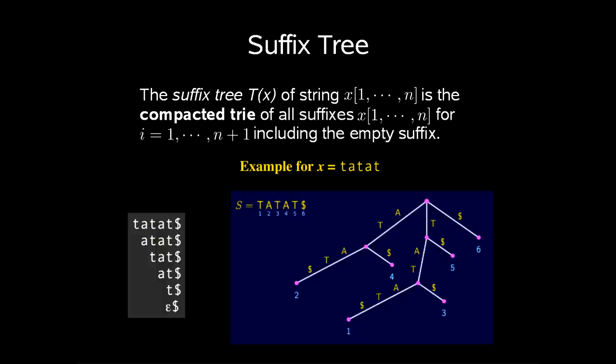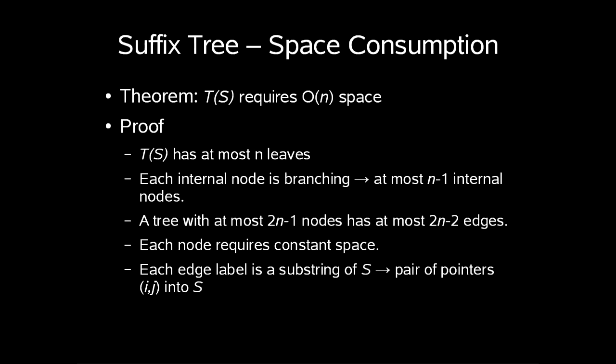A suffix tree named T of some string x from 1 to n is a compacted tree of all the suffixes of x of i to n for i equals 1 up to n plus 1, including the empty suffix. This will take order n space to store this tree. This can be proved very simply, which I will show here.